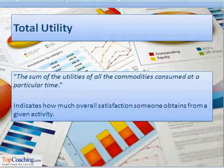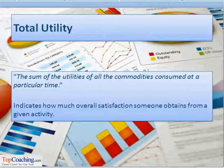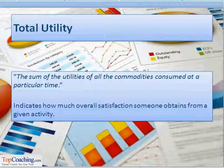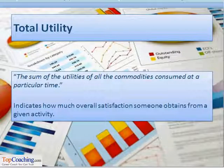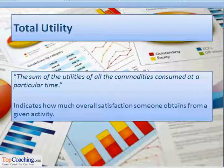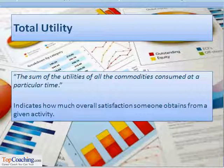Another type of utility is total utility. Total utility is the sum of the utilities of all the commodities consumed at a particular time. Total utility is most often used in consumer demand theory to indicate how much overall satisfaction someone obtains from a given activity or the consumption of a given amount of a commodity.